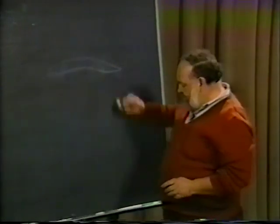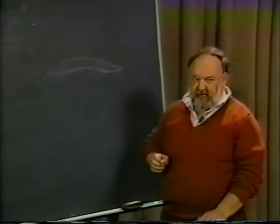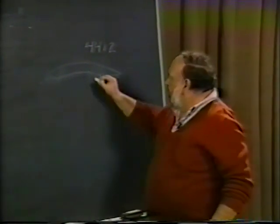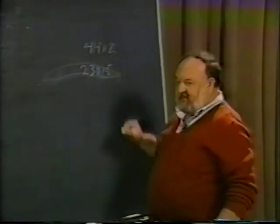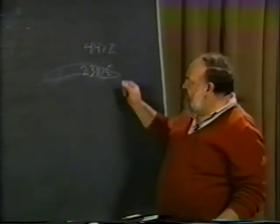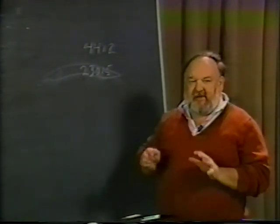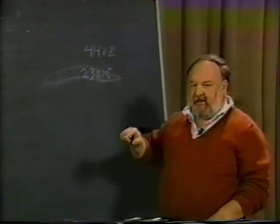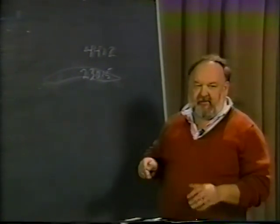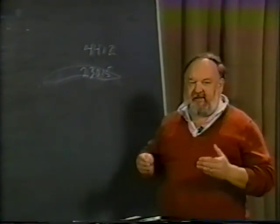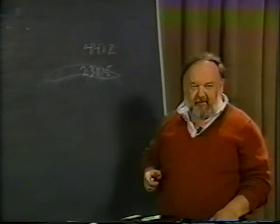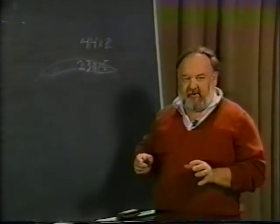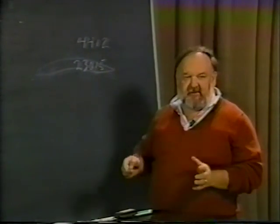Later on, NACA came up with a series of airfoils we call the four-digit and the five-digit series. For example, the 4412 is a good example of the four-digit series, and the 230-15 is a five-digit section. These airfoils were laid out with a series of mathematical plans defining the amount of camber and the shape of that camber relative to the chord line — whether it was a second-degree or third-degree equation and so on. They came up with a systematic way of laying out streamlined shapes, built models, put them in a wind tunnel, discarded the bad ones, and published the results of the good ones.